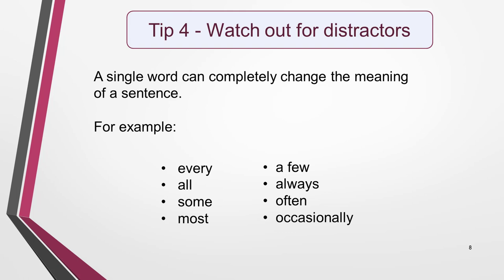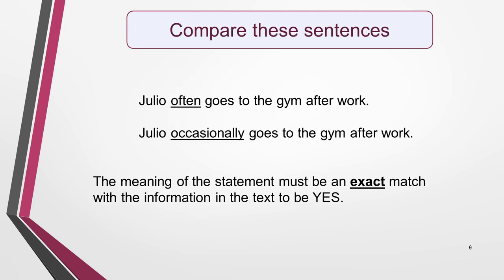Tip four: watch out for distractors. Be aware that the test setters love to use distractors to really test you. A prime example is qualifying words such as every, all, some, most, a few, always, often, occasionally. These single words can completely change the meaning of a sentence. Compare these two sentences: 'Julio often goes to the gym after work' versus 'Julio occasionally goes to the gym after work.' In the second sentence, just one word has been changed, but it gives it a very different meaning. In yes, no, not given questions, the meaning of the statement must be an exact match with the opinion of the writer for the answer to be yes.